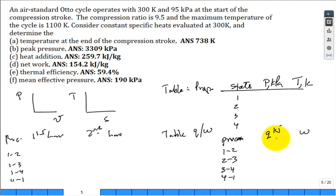Let's go ahead and read this problem and start filling in this information. It's an Otto cycle, so we're gonna go like this. There's one, there's two, there's three, there's four. On the temperature entropy diagram: one to two, two to three, three to four, back to one. They tell us 300 Kelvin and 95 kilopascals at the start of the compression stroke. They just gave us T1 and P1, so we'll put that in there: 95 kilopascals and 300 Kelvin.